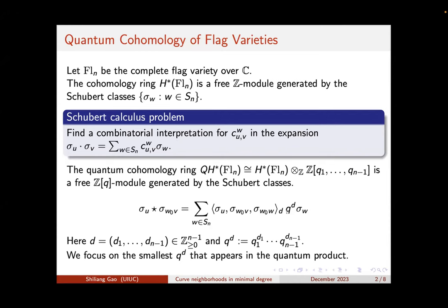In particular, if we set all of the Q's to be zero, then we recover the product in the cohomology ring of the flag variety. Moreover, if we have all of the D's — here D is the degree where all D's are non-negative integers — if all the D's are zero, the structure of these quantum products is given by the Gromov-Witten invariants. These are non-negative integers, and we recover the Schubert structure constants when all D's are zero.